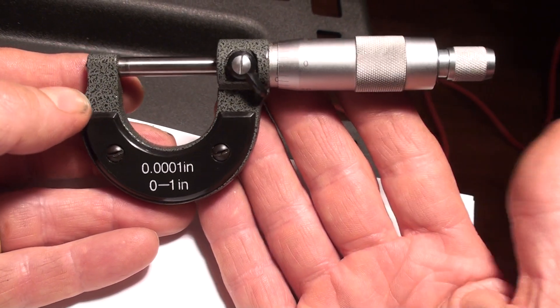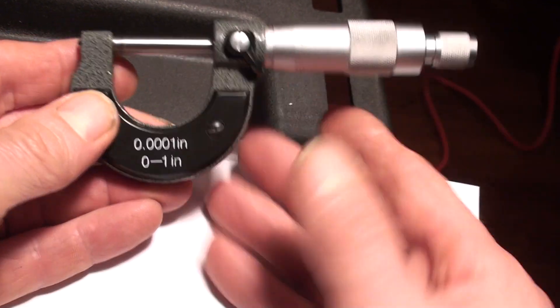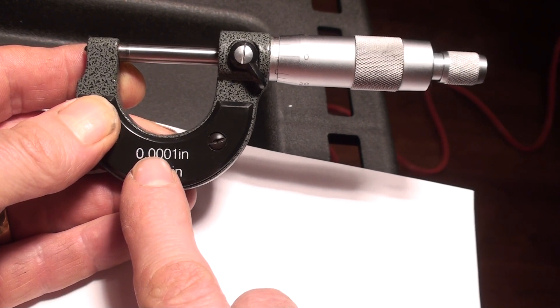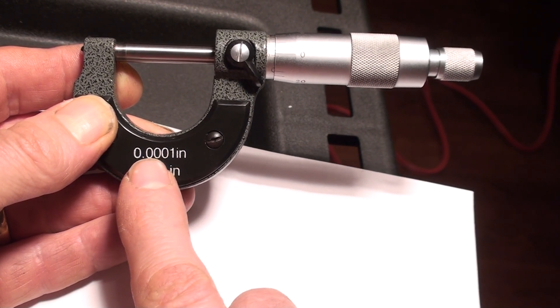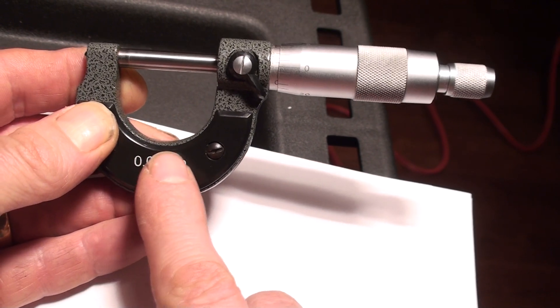We're going to do a little video on a micrometer. This is a one-inch micrometer. It says zero to one inch down here and it reads in 0.0001 of an inch, or one ten-thousandth of an inch. We'll gradually go through this so you can understand it.